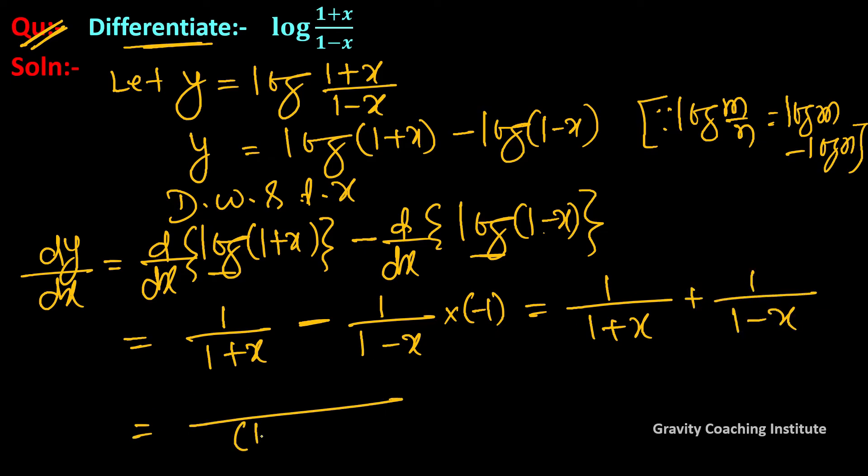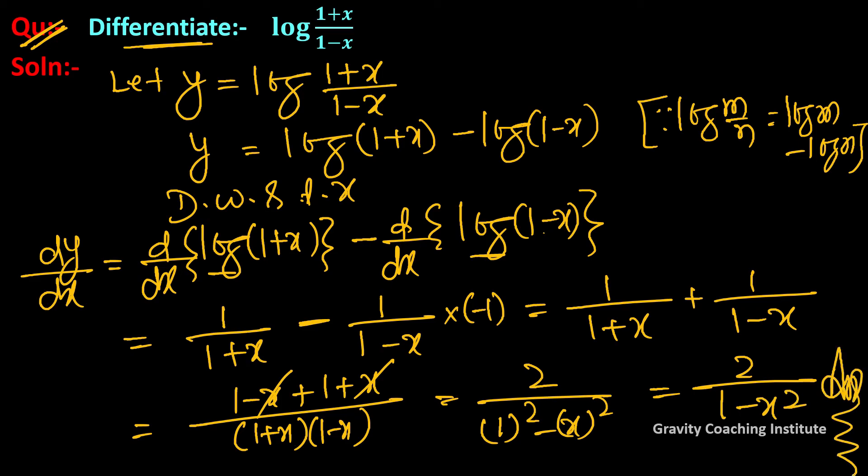So equal to 1/(1+x), and this minus times minus becomes plus, 1/(1-x). Taking LCM, this becomes (1-x+1+x)/((1+x)(1-x)). The x's cancel, giving 2. Using the identity (a+b)(a-b), the denominator becomes 1 squared minus x squared. So equal to 2/(1-x²), answer.